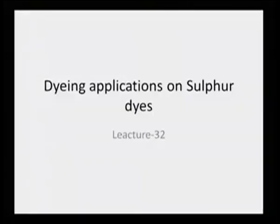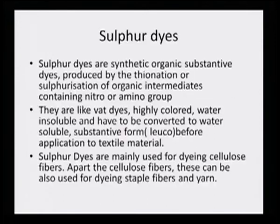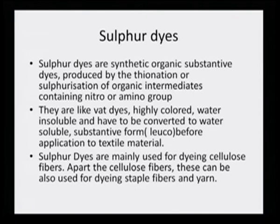Today we will learn about dyeing with sulphur dyes. Sulphur dyes are synthetic organic dyes produced by the thionation or sulphurization of organic intermediates containing nitro or amino groups. The molecule must have either a nitro group or an amino group, and the dye is prepared by thionation or sulphurization.